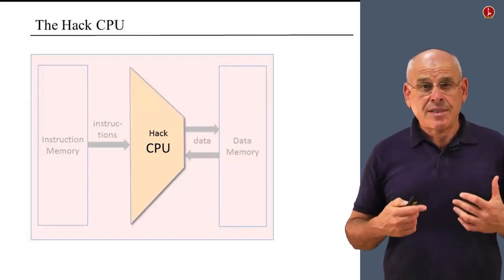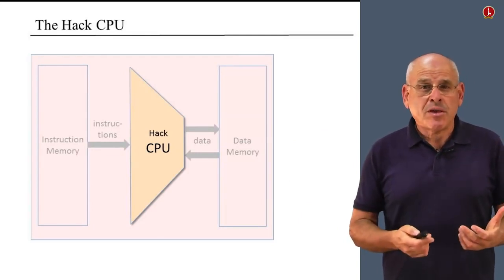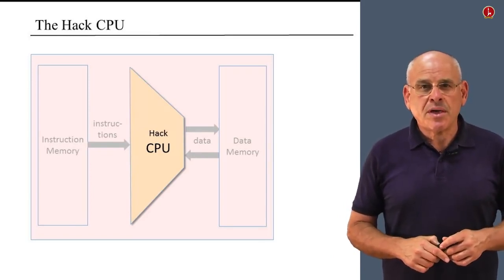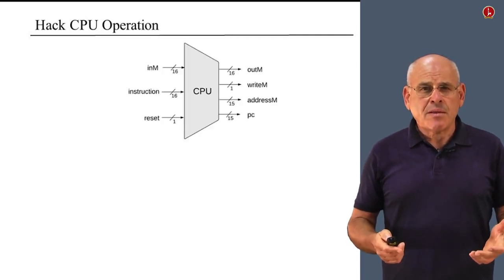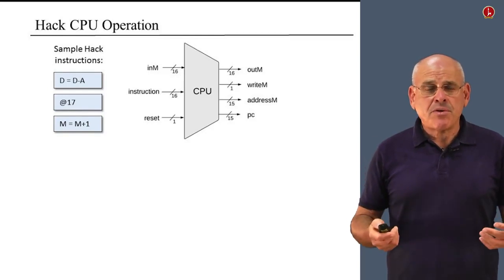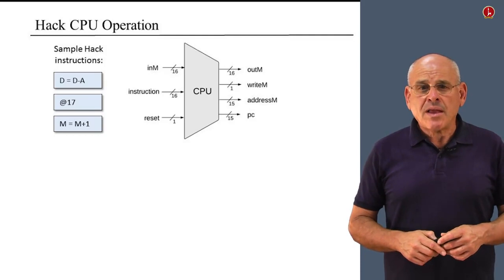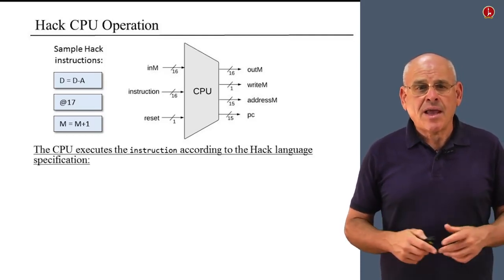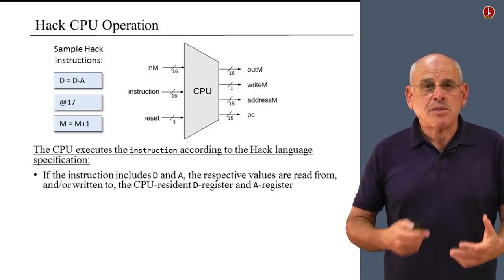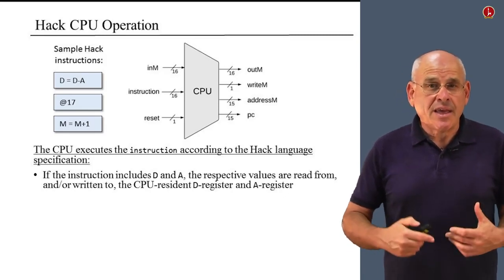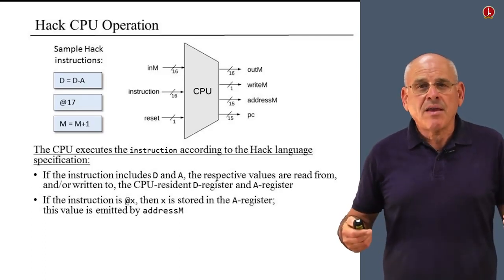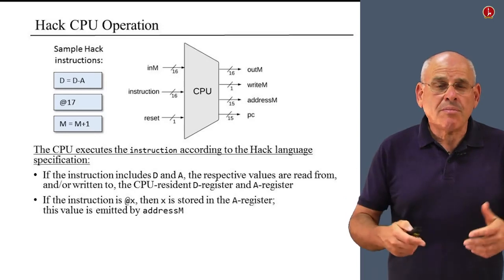Let us start with the CPU, which is the centerpiece of the architecture. Here is the interface we saw in the previous unit. Let's explore it in the context of three possible Hack instructions. Everything is done according to the Hack language specification contract. If the instruction mentions the mnemonics D or A, the CPU will manipulate the respective D and A registers which reside inside the CPU. If the instruction is an A instruction, the CPU takes the 15-bit value and puts it inside the A register.